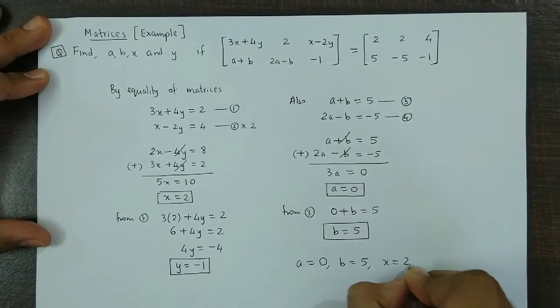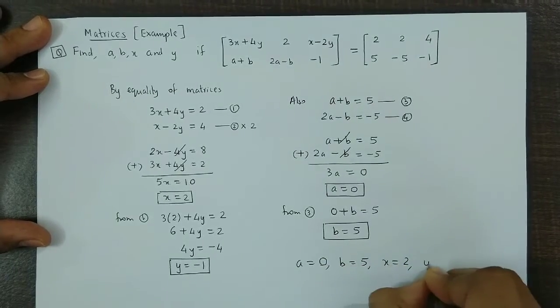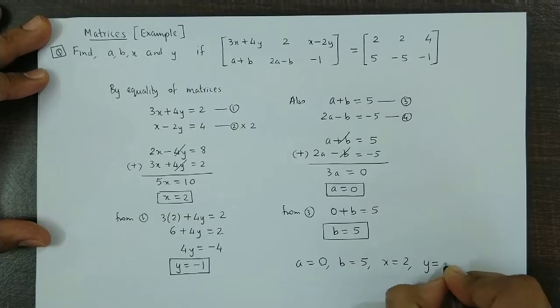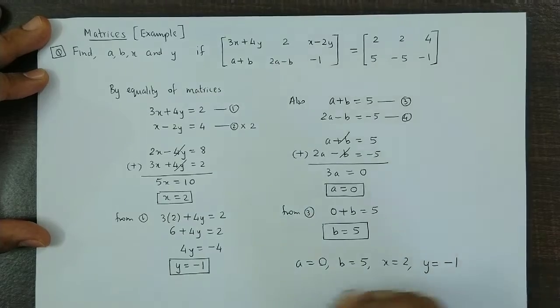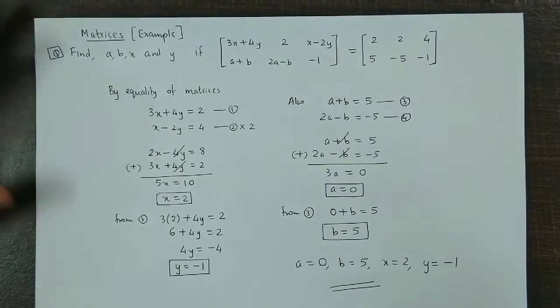X is equal to 2 and Y is equal to minus 1. So all four missing values have been found.